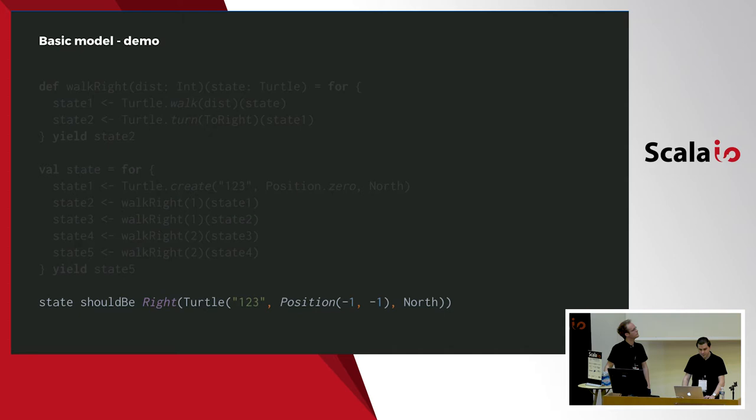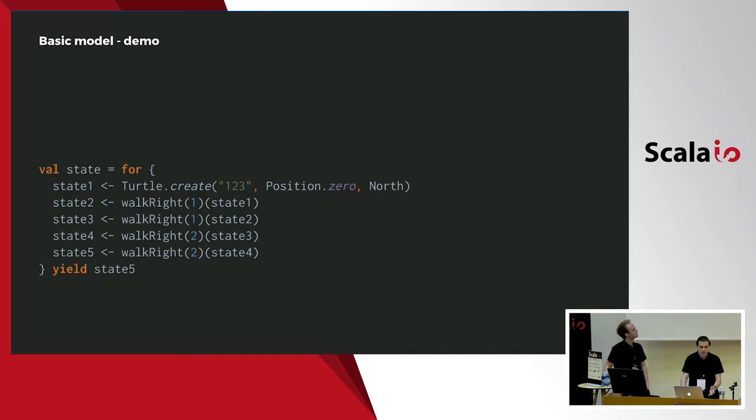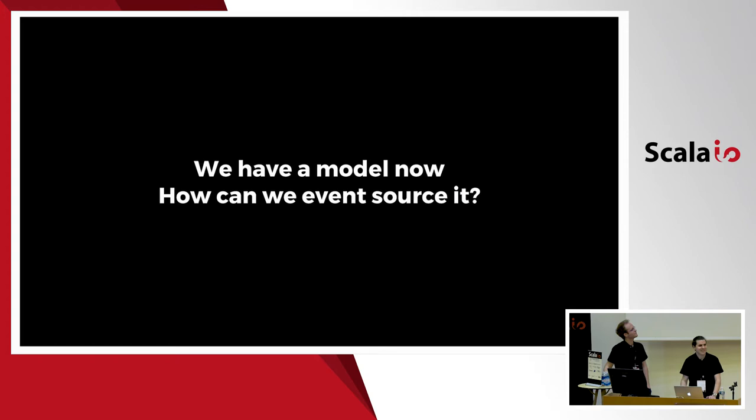Let's look at the states and test them. If you look at this code, there is a slight problem: there is some duplication — we have to pass the state from step to step. We can mitigate this problem for now by using flatMap. Okay, problem solved — well, not really. But we have a model, we have a turtle, and we can do something with it.